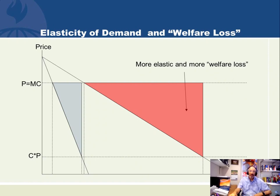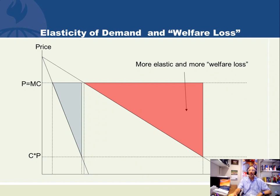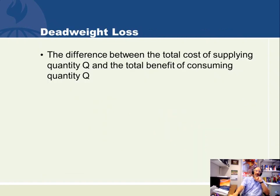Inelastic demand curves have a smaller dead weight loss, but it's hard to make demand curves turn inelastic, and so much of American health care policy has been about trying to restrain utilization using instruments like copays and gatekeeping. We will have a lot to say about that later in the course — I'm just foreshadowing it right now and giving you a picture of it. When you want to remember what dead weight loss is: the top of the triangle is the cost to society, the bottom of the triangle is the value of the units transacted. Dead weight loss is the difference between the total cost of supplying quantity Q and the total benefit of consuming quantity Q.